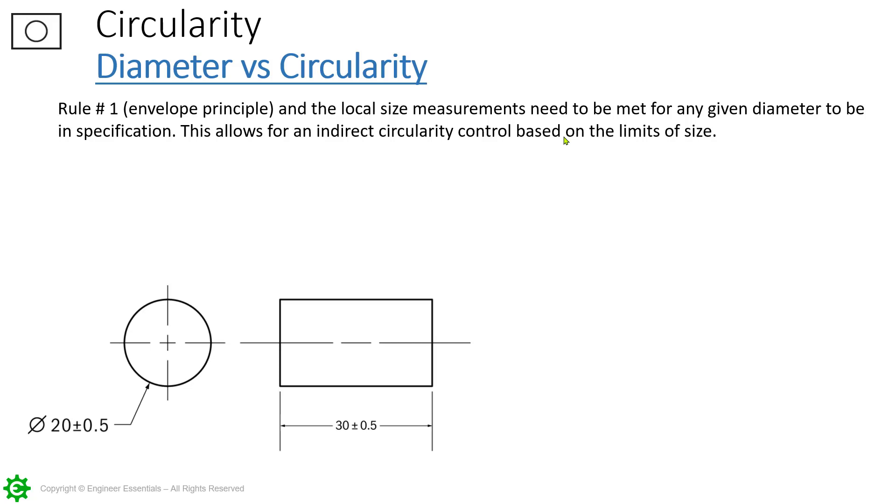Going back up here to the top it states rule number one which is the envelope principle. Some of you may refer to that as Taylor's principle especially those of you involved with any kind of fixturing and gauging. Rule number one states the local size measurements need to be met for any given diameter to be in specification. This allows for an indirect circularity control based on the limits of size. I want to show you something here.